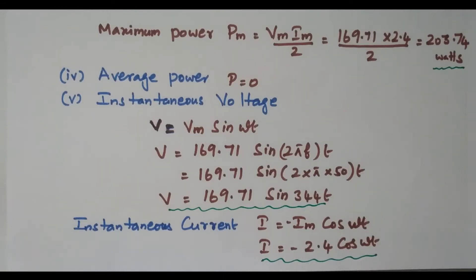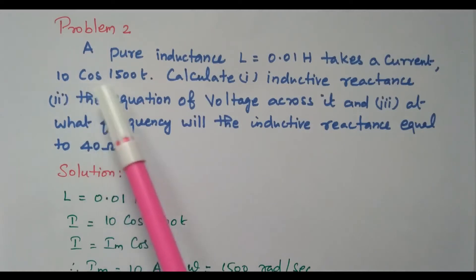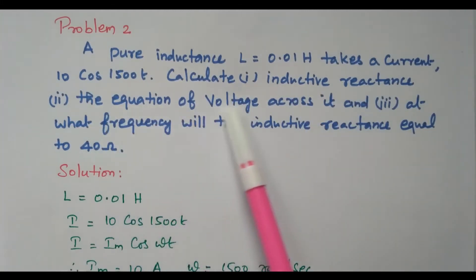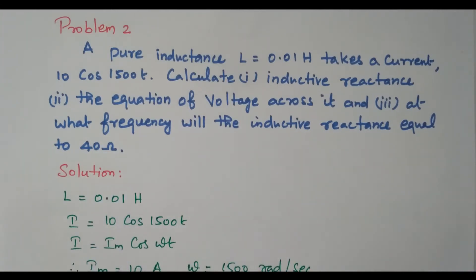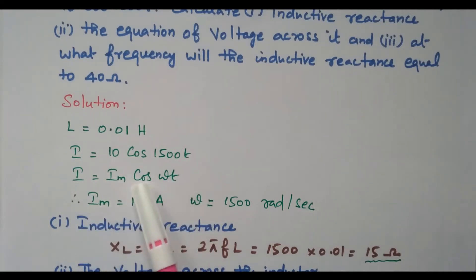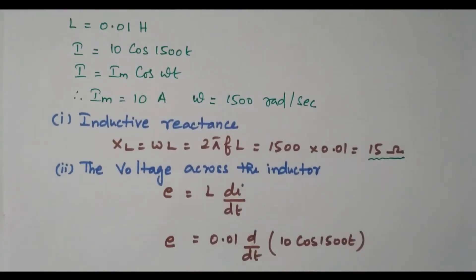Now we go to the second problem. A pure inductance of 0.01 Henry takes a current of 10 cos(1500t). Calculate inductive reactance, equation of voltage across it, and the frequency for inductive reactance equal to 40 ohms. From the given current, comparing with the standard form I = Im cos(ωt), we identify Im = 10 amperes and ω = 1500 radians per second.